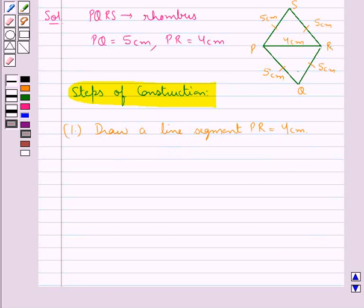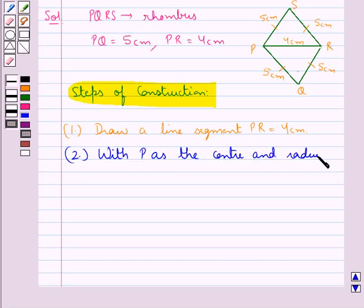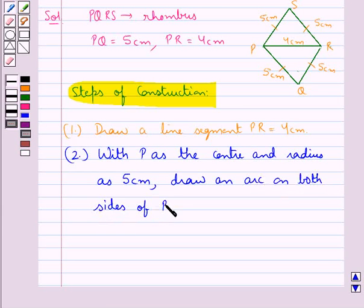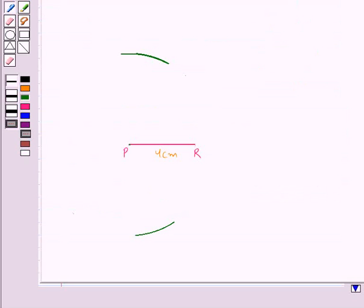Now, we need to locate the points S and Q. For this, first of all, with P as the center and radius as 5 cm, we draw an arc on both sides of PR. So, we have drawn these arcs on both sides of PR, taking P as the center and radius as 5 cm.